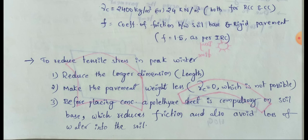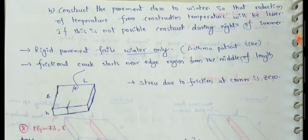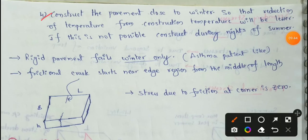Concrete needs moisture content from the soil. Loss of water into the soil must be avoided, which is why the polythene sheet is used. This prevents loss of water and maintains moisture for the concrete.